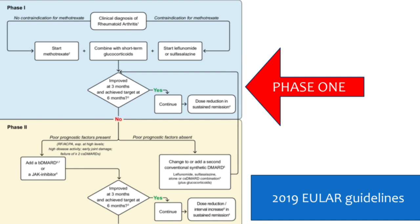If there is a contraindication to methotrexate, we can start with leflunomide or sulfasalazine. If the patient has improved at three months and achieves targets at six months, continue; later, if doing well at 17.5 mg methotrexate, you can even reduce the dose to 15 mg. In phase two, if poor prognostic factors are present — like anti-cyclic citrullinated peptide at high levels, high disease activity, or early joint damage — add a biological DMARD or a JAK kinase inhibitor. If poor prognostic factors are absent, change to or add a second conventional synthetic DMARD like leflunomide or sulfasalazine.